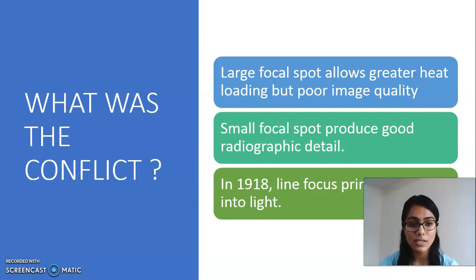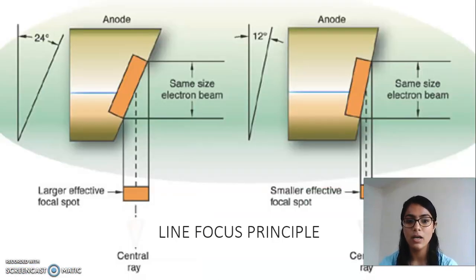So in 1918 line focus principle came into existence. What is line focus principle? What does it say? The focal spot size and shape is determined by the size and shape of an electron stream that is produced by the cathode and bombarded by the anode.